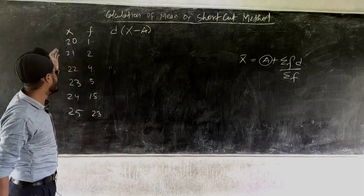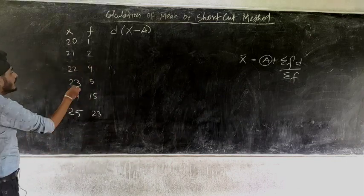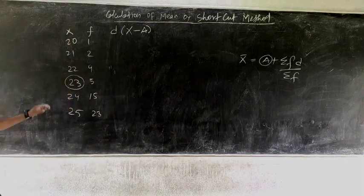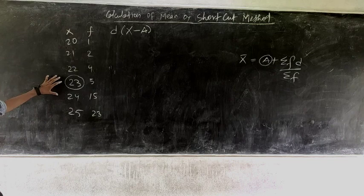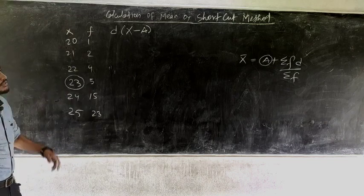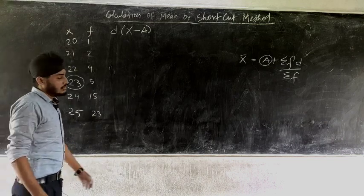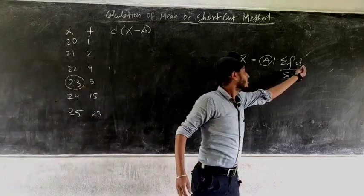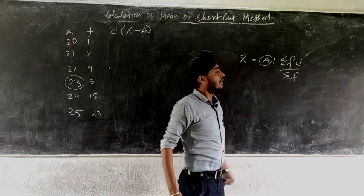We will take 23 as the assumed mean — it is better to take a middle term. Now d is also a new concept here. So how do we find d? d is x minus A.